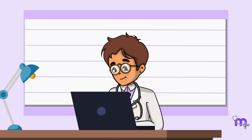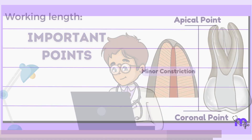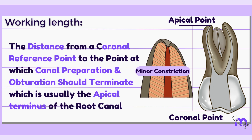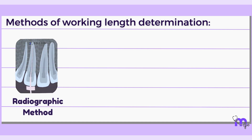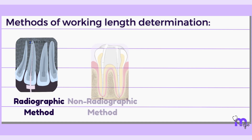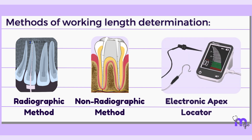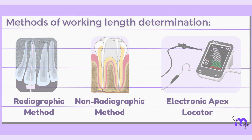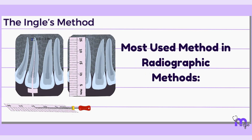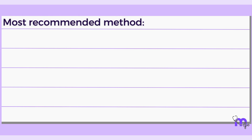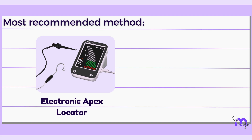Before we conclude, let's go through the important points. Working length is the distance from a coronal reference point to the point at which canal preparation and obturation should terminate, which is usually the apical terminus of the root canal. Methods of working length determination include radiographic methods, non-radiographic methods, and electronic apex locators. The Ingle's method is the most used and recommended radiographic method, and is often used in amalgamation with electronic apex locators.